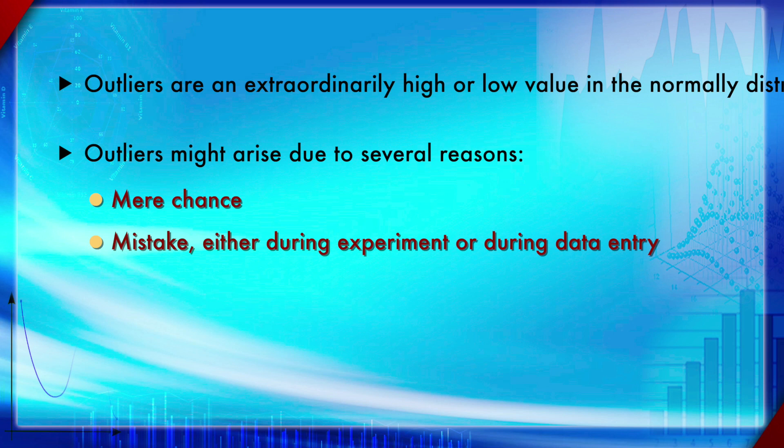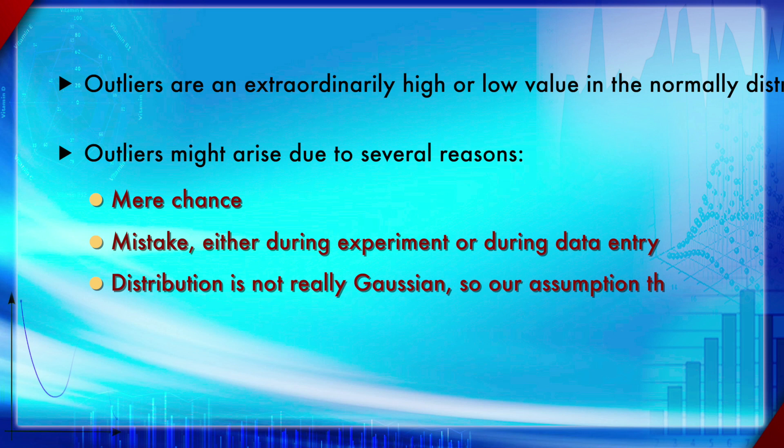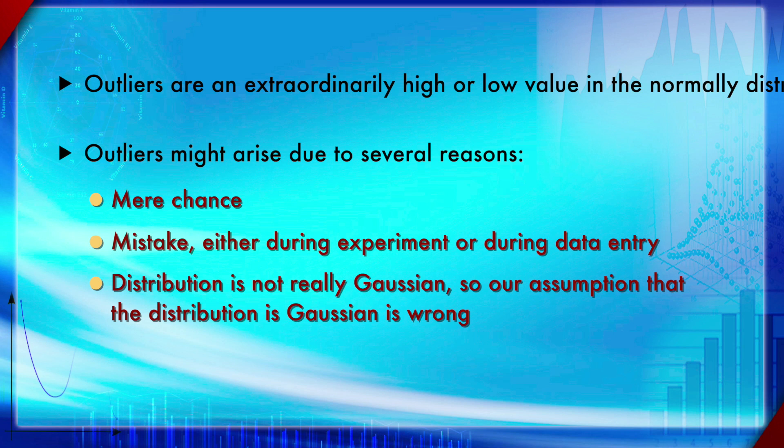You have to detect outliers using formal statistical tests and remove them before going for any data analysis. It could also be because the distribution is not exactly Gaussian at all — it could be something like a log-normal distribution. In that case, there will definitely be an outlier as part of the log-normal distribution's characteristics, and calling it an outlier would be a mistake.